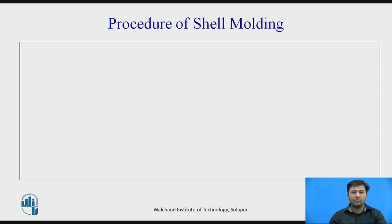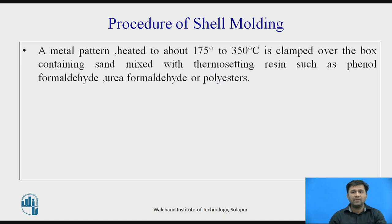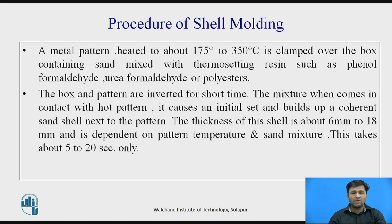In the shell moulding process, the metal pattern is heated to 175 to 350 degrees centigrade, depending on the constraints, size, and design parameters of the part. The pattern is clamped over a box containing sand mixed with thermosetting resin such as phenol formaldehyde, urea formaldehyde, or polyesters. The box and pattern are inverted for a short time; the mixture contacts the hot pattern and builds up a coherent sand shell next to it. The shell thickness is about 6 mm to 18 mm, taking only 5 to 20 seconds.